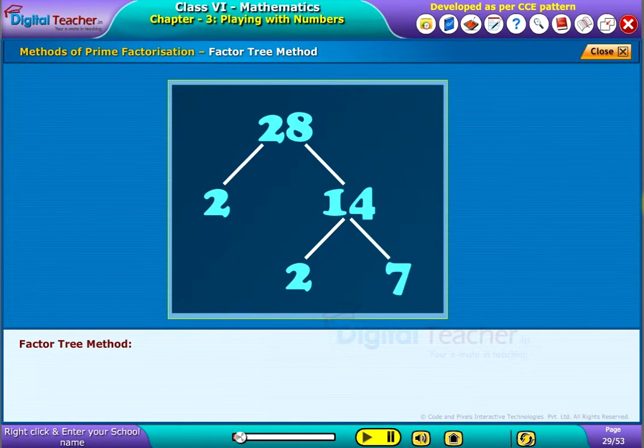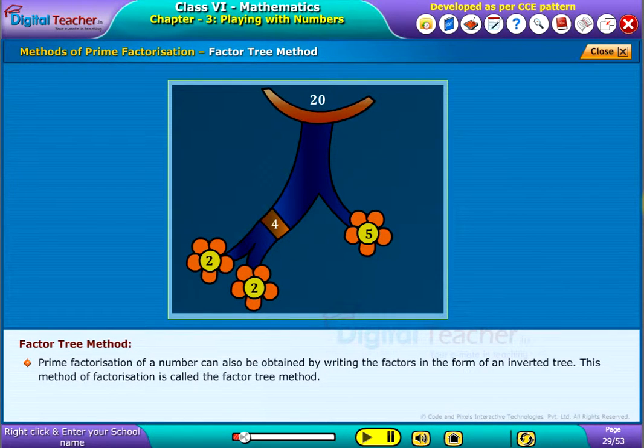Factor tree method: Prime factorization of a number can also be obtained by writing the factors in the form of an inverted tree. This method of factorization is called the factor tree method.